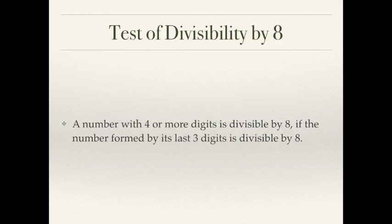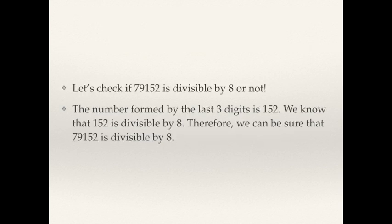Coming to divisibility by 8: a number with 4 or more digits is divisible by 8 if the number formed by its last 3 digits is divisible by 8. Note that for 4 it was the last 2 digits, while for 8 it is the last 3 digits. For example, 79,152 — check the last 3 digits: 152. Since 152 is divisible by 8, therefore 79,152 is also divisible by 8.